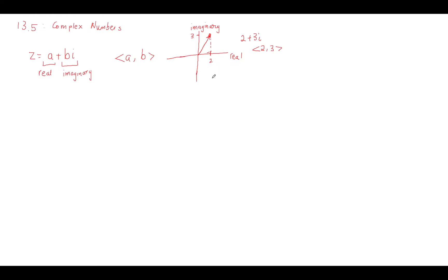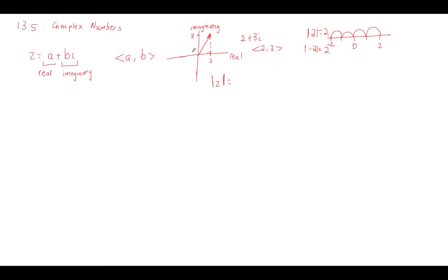One idea is the absolute value. If you have the absolute value of a complex number, that's the same as getting the distance from 0. If you think about the absolute value of 2 on a number line, you're measuring the distance away from 0 — so 1 unit, 2 units, the absolute value is 2. For a complex number, the distance away from 0 is not a horizontal or vertical line, it's a diagonal — like a hypotenuse or the magnitude of a vector.